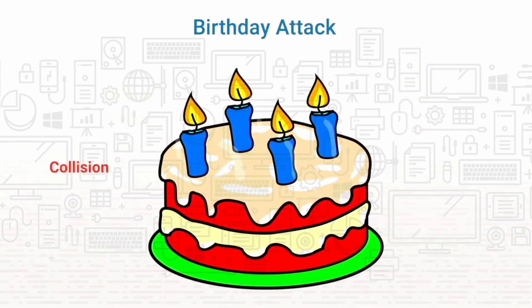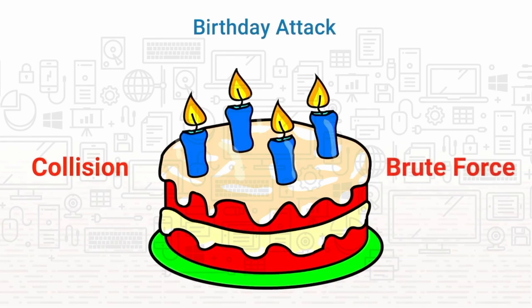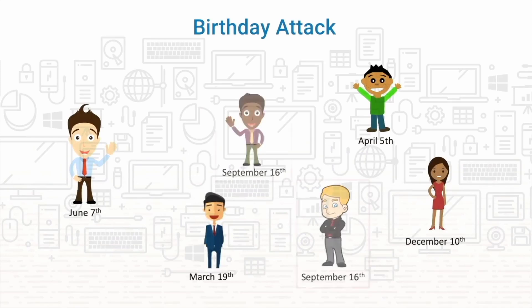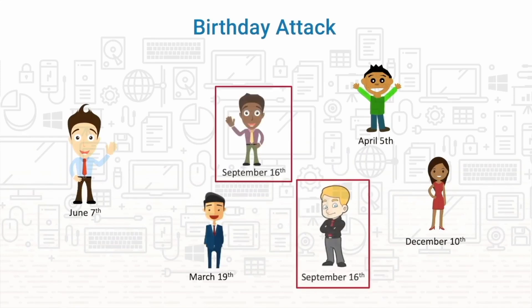A birthday attack combines a collision attack and a brute force attack. This attack's name is taken from the birthday probability math problem. If you have 30 people in a room, the chance that someone has the same birthday as you is about 8%. But the probability that any two people in the room have the same birthday is 70%. This is because we're not looking for an exact match, just any match. This concept can be used to create two documents with the same hash, as in the collision attack example.